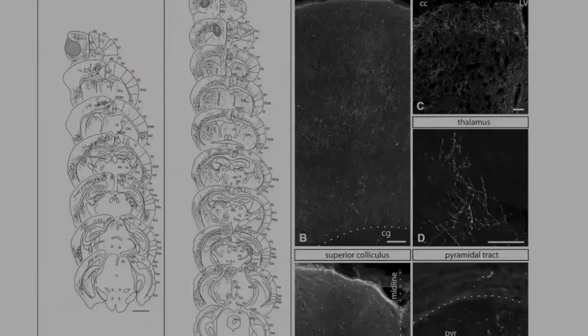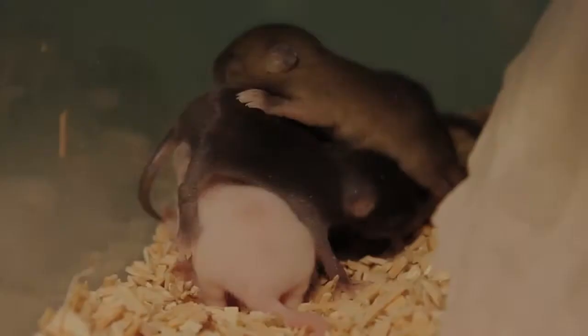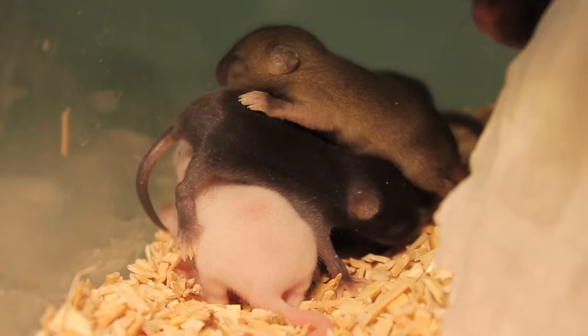Interestingly, these neurons fully integrate into the mouse cortex from early post-transplantation stages; however, their maturation seems to follow a very slow and specific pace that closely resembles the timeline of the human cortex development.